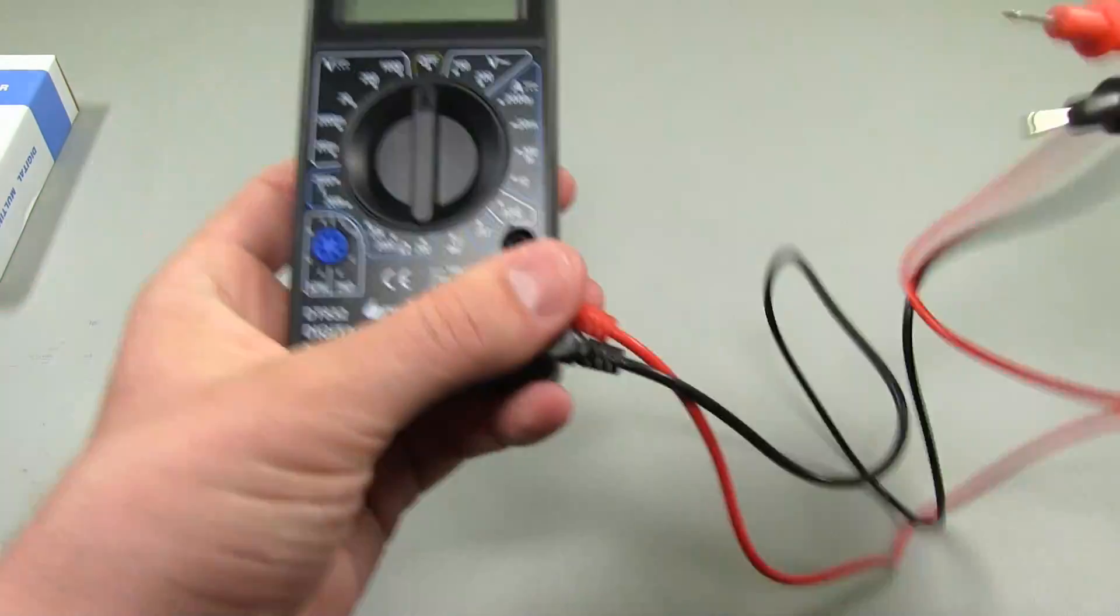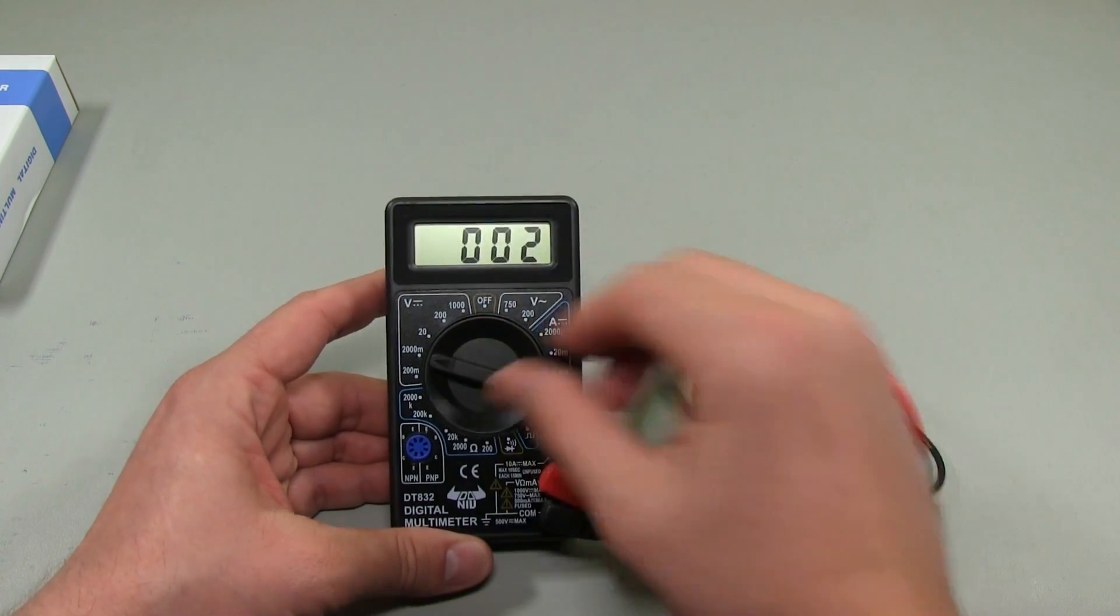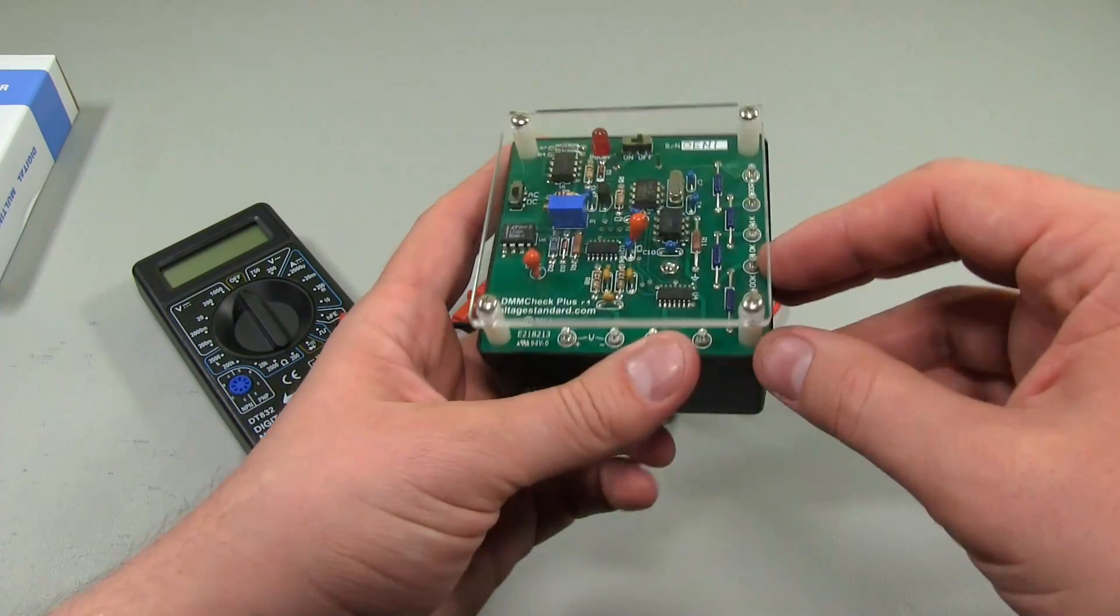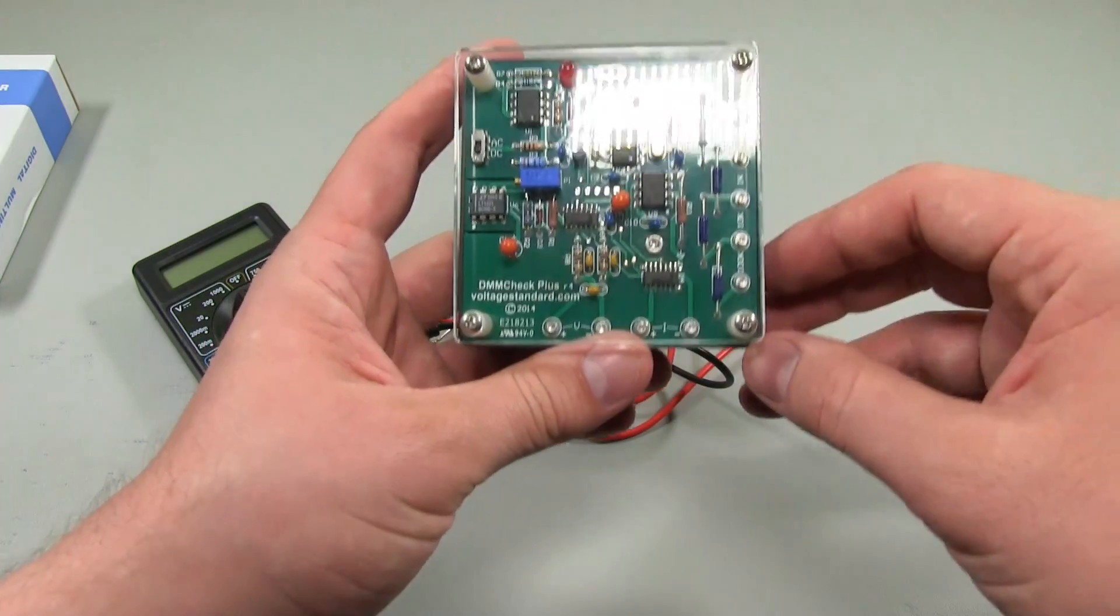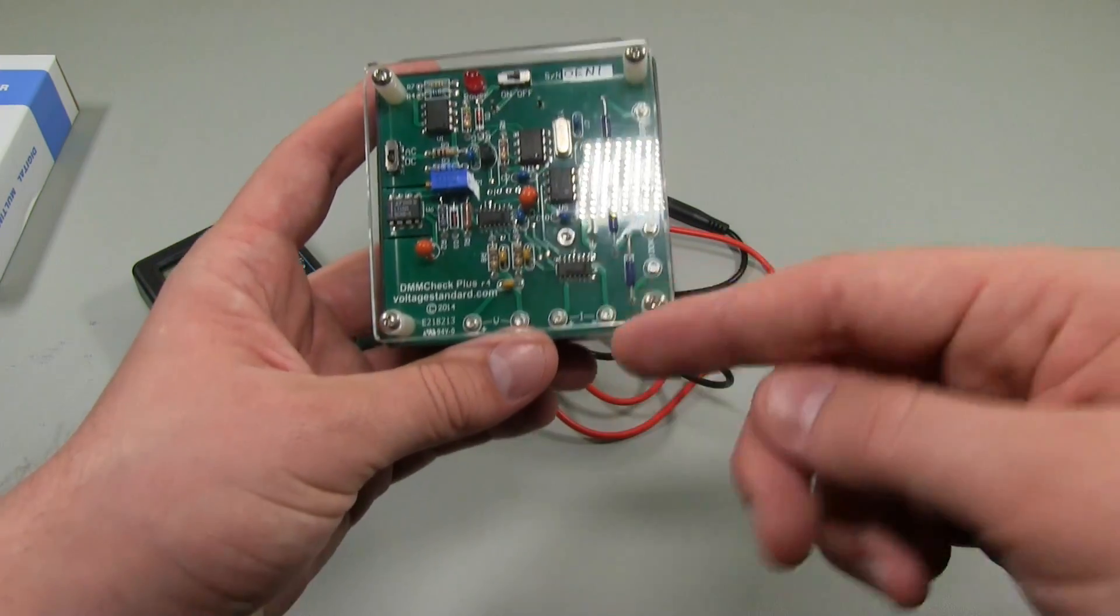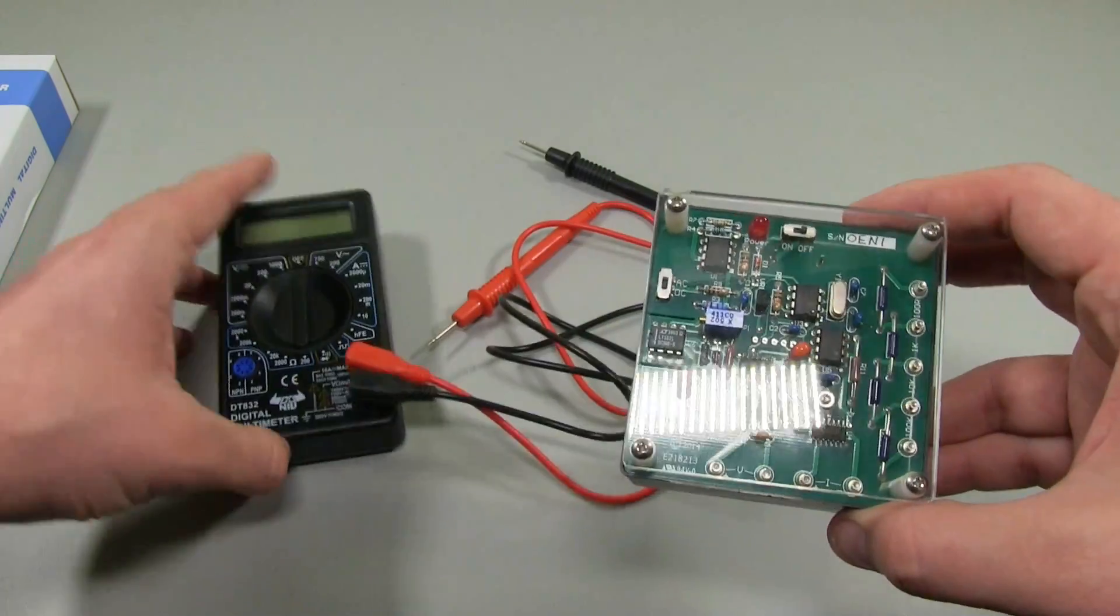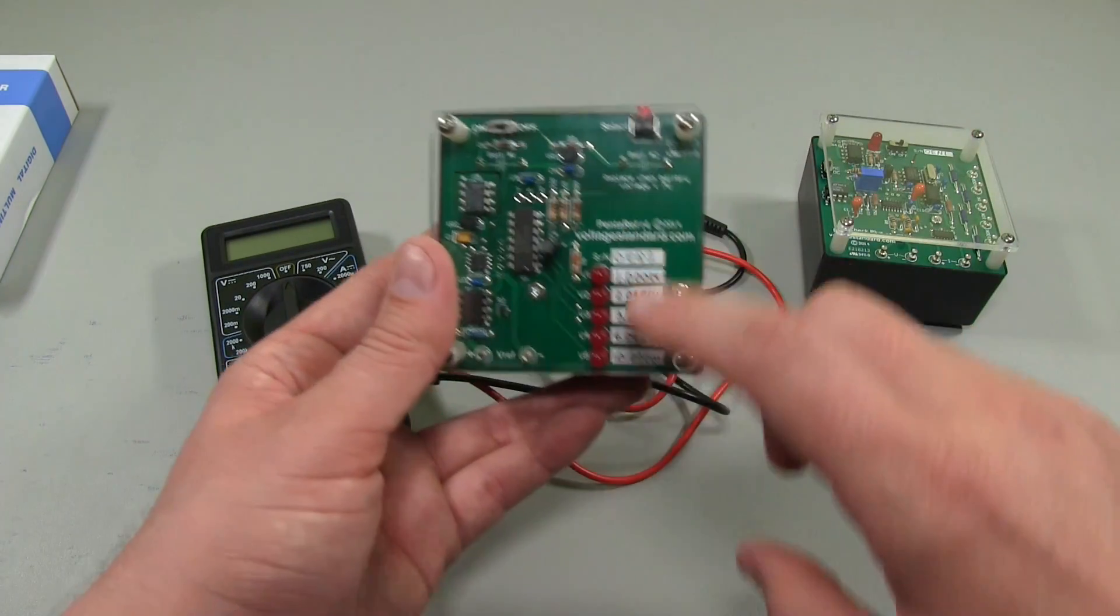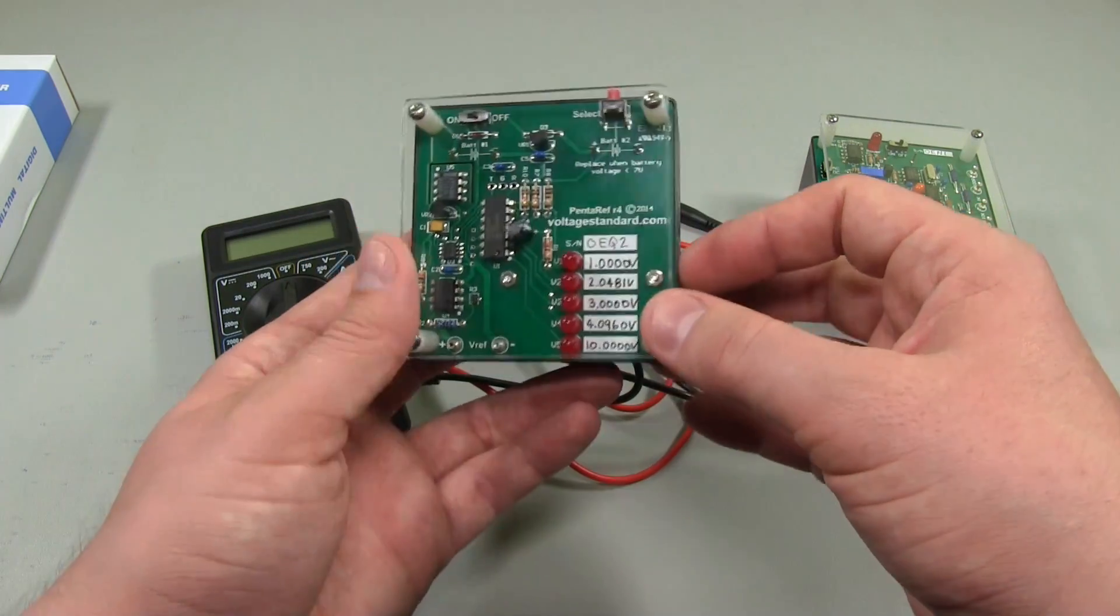Today we're going to be testing this multimeter, the accuracy and the measurements, with this DMM Check Plus from voltagestandard.com. This is pretty good because it does AC and DC voltage and current, it does frequency, and some precision resistance here as well. So we can test most of these functions with this one device. I can also test with this, which has got five custom DC ranges that I specified when I ordered this.